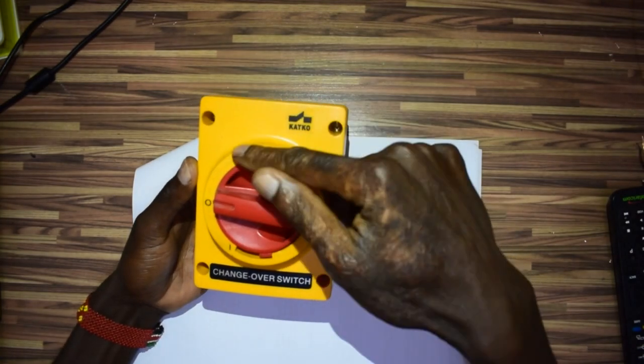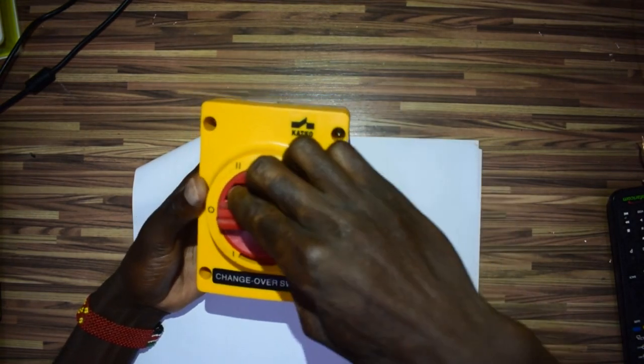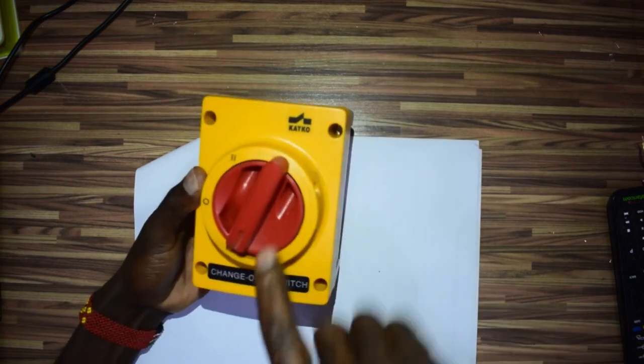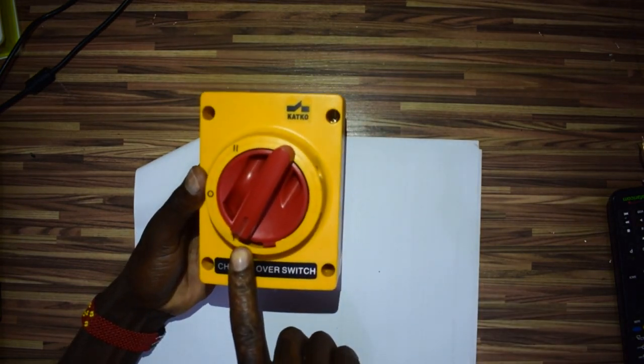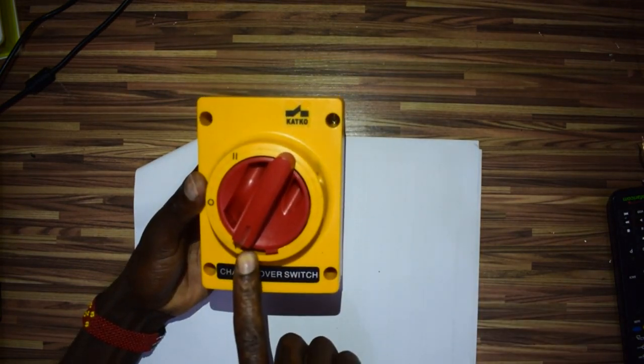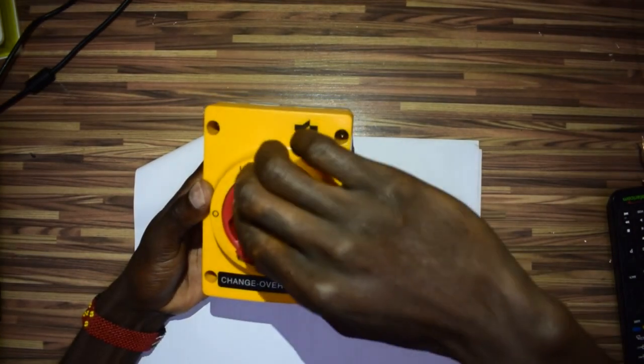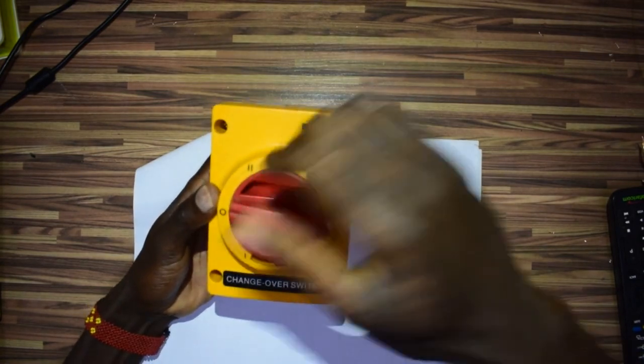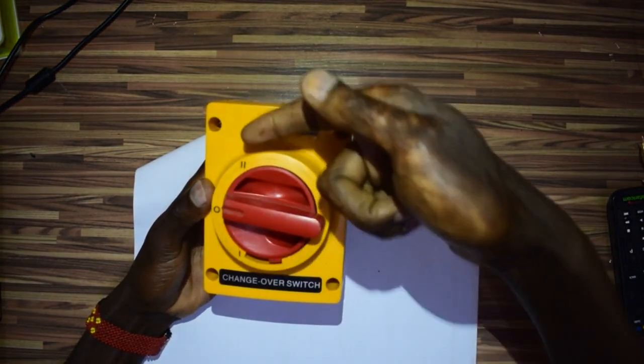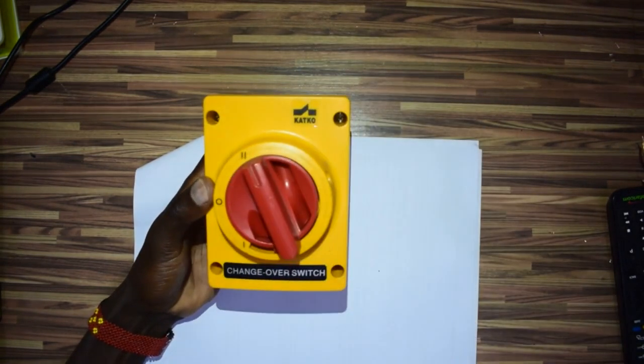During normal operations you have it at number one. In case of power outage or load shedding, you bring it to zero after your generator has started, then you put it there.